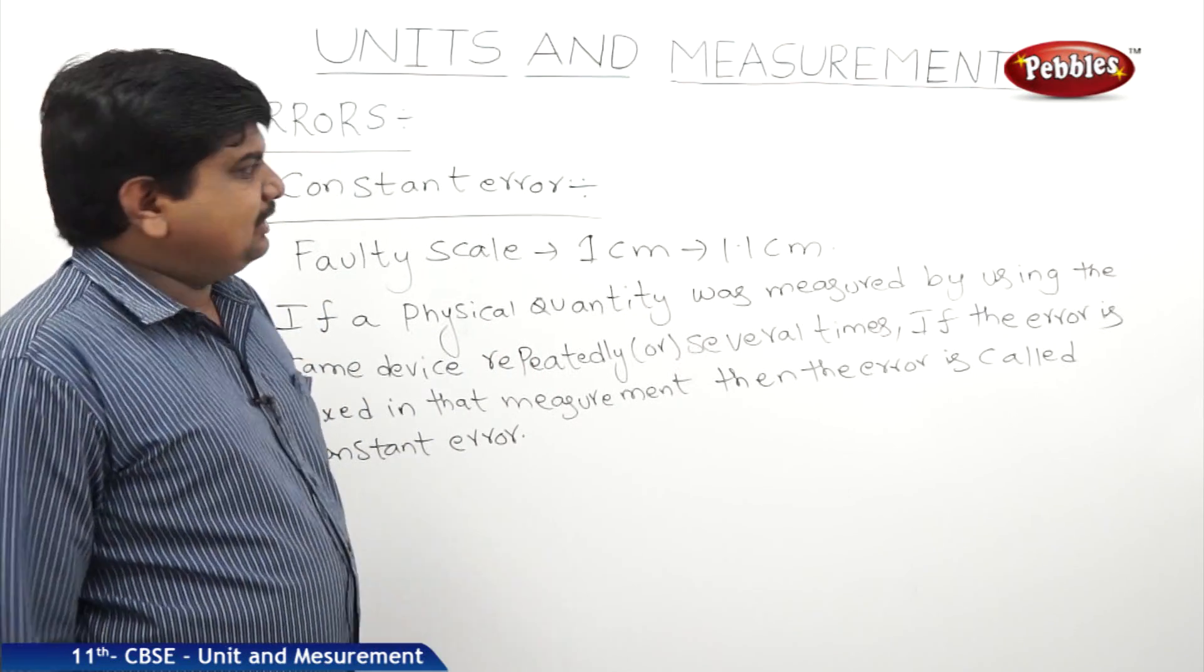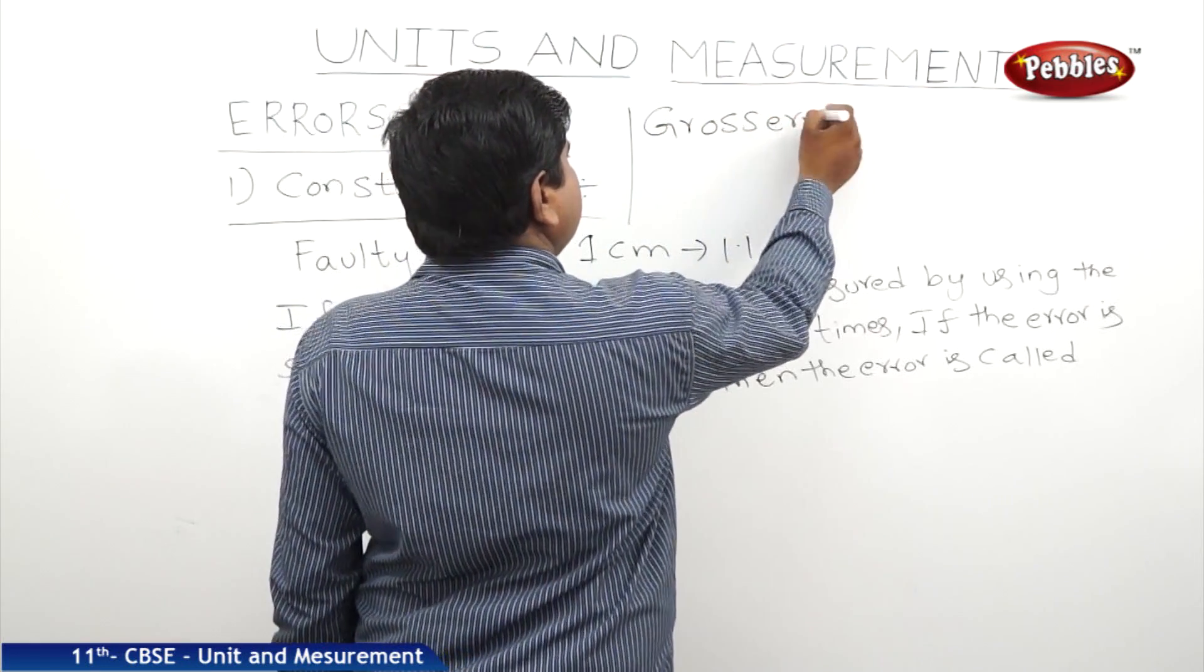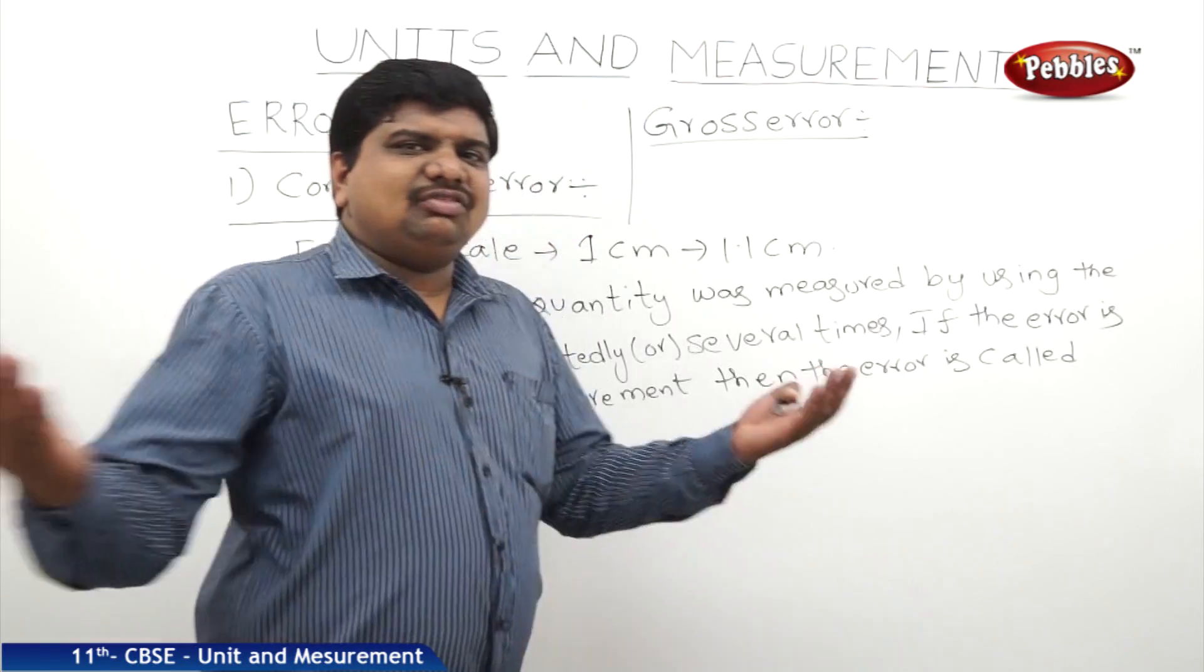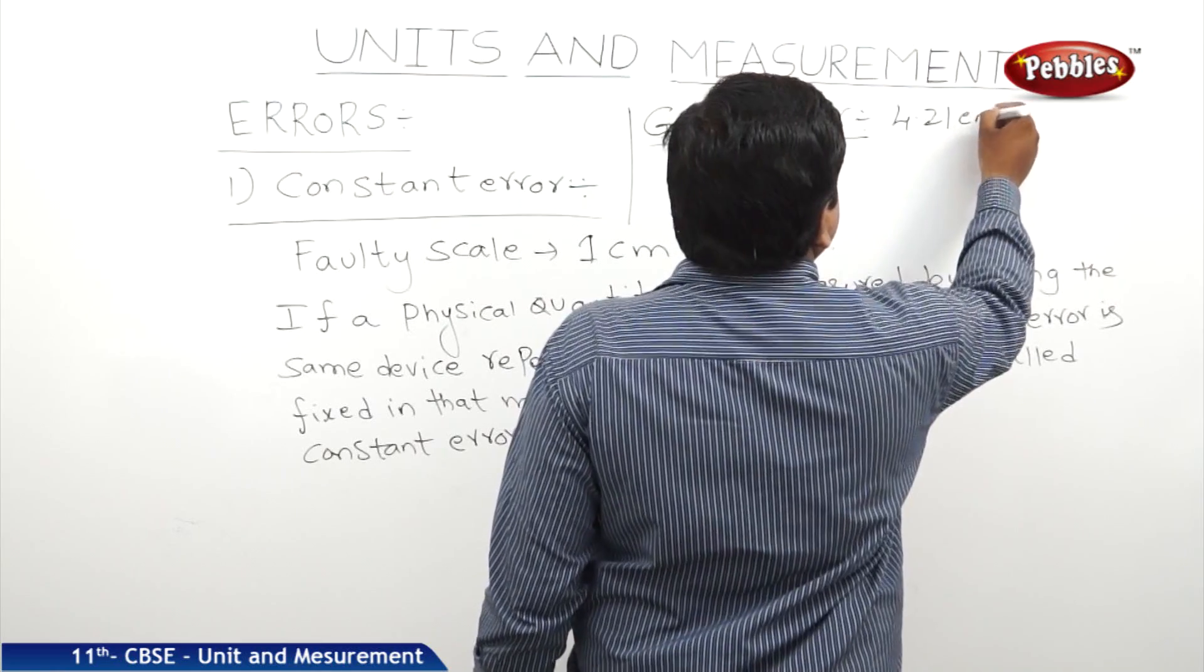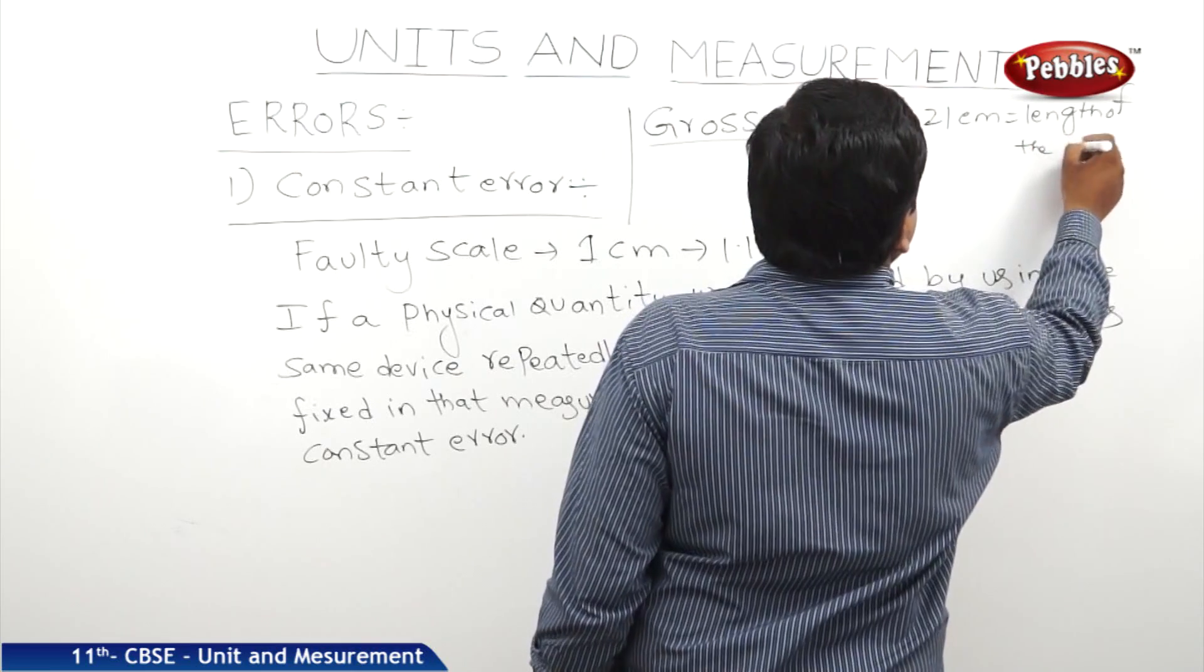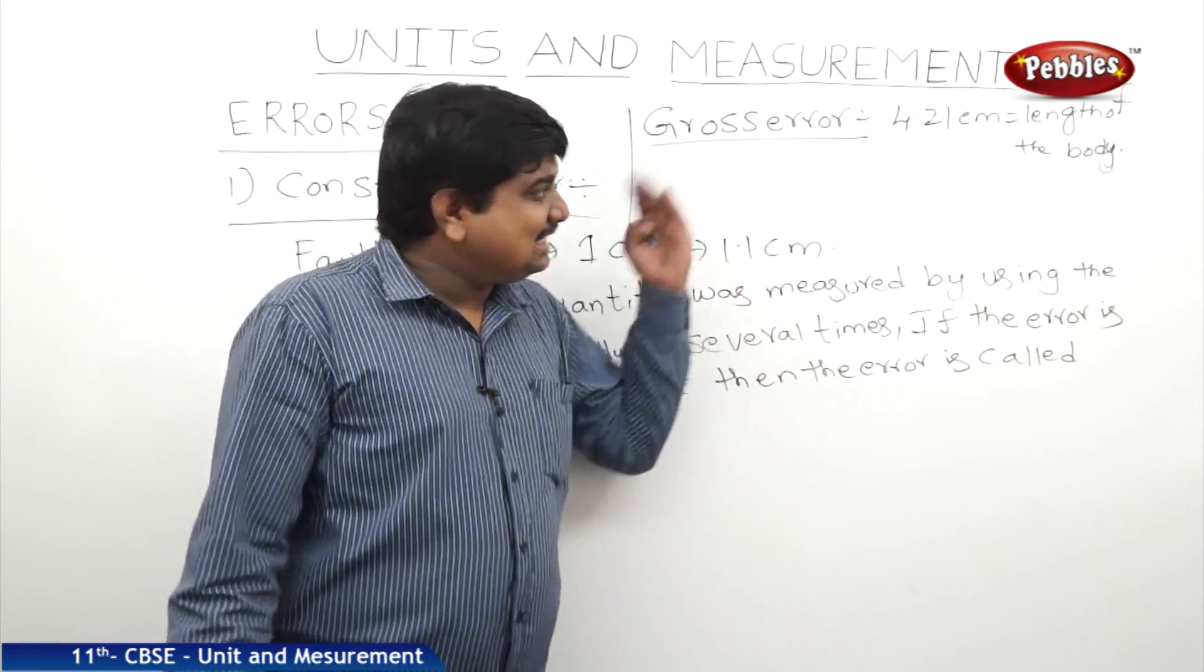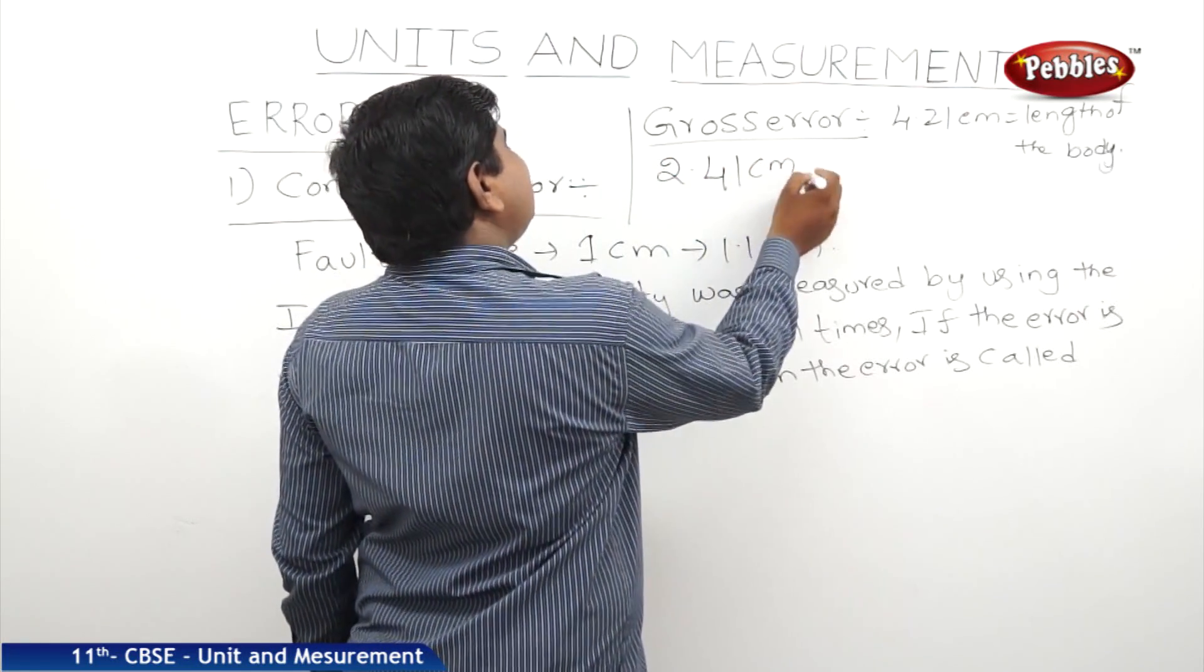This is another type of error. The next one is gross error. Gross error means error in the calculation, simply we can say. Let us suppose, length of a body, if it is some 4.21 cm, length of body. Instead of substituting this 4.21 in the formula, what is the result? A student has substituted 2.41, let us suppose.